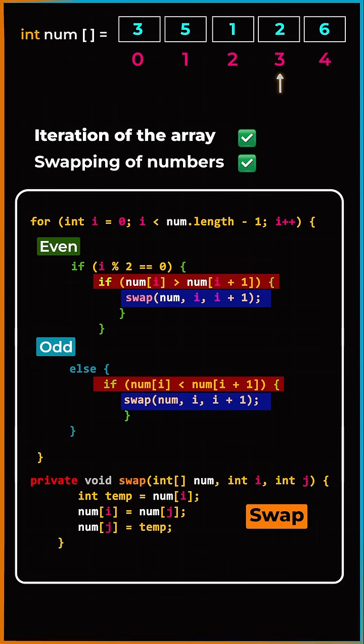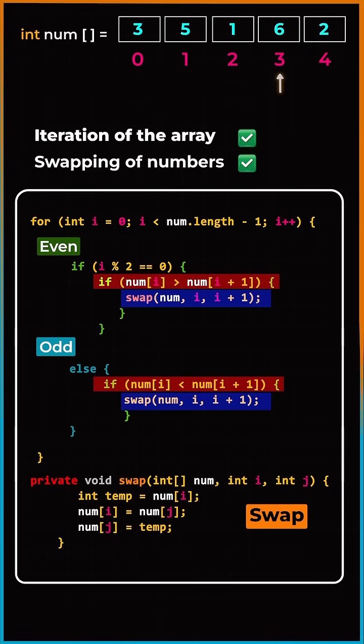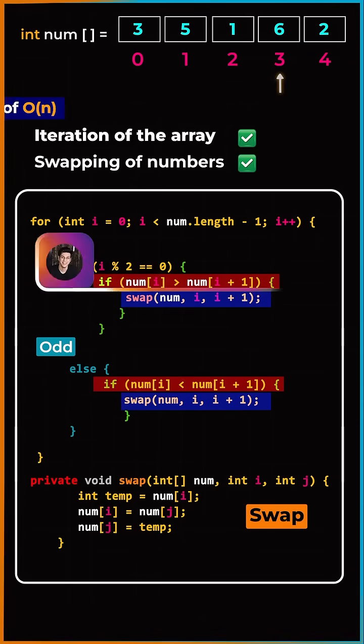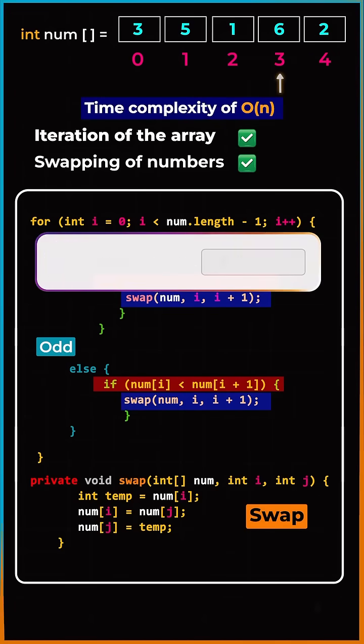Now we will compare 2 with 6. 2 is less than 6, so again we will do the swap and we are done. The array is wiggled. The code complexity of this program is O of N.